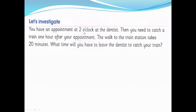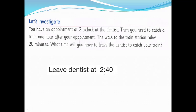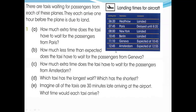Your appointment is at two o'clock, and you need one hour there, so that's three o'clock. The walk to the train station takes 20 minutes, so subtract 20 minutes from three o'clock: 3:00 minus 20 minutes is 2:40. So you leave the dentist at 2:40, then plus 20 minutes gets you to the station at three o'clock to catch your train.